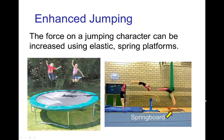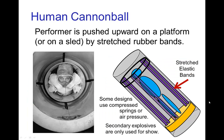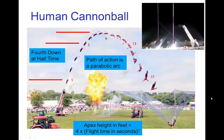If you're not a superhero, you can still do an impressive jump if you somehow enhance the forces in the jump — for example, using a trampoline or a gymnast using a springboard, allowing for a larger jump magnification than normal. The extreme example is the human cannonball, a circus act where a performer is in a tube and propelled upward using stretched elastic bands, compressed springs, or air pressure — similar to a very large enhanced jump.